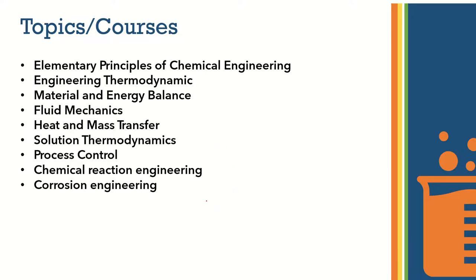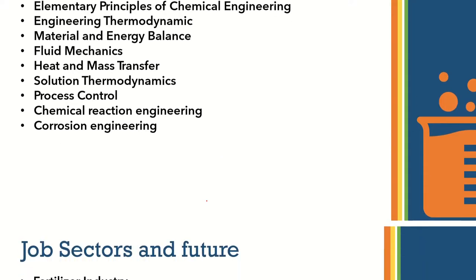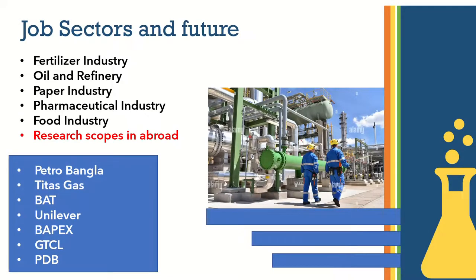When we consider a Chemical Engineering or Applied Chemistry and Chemical Engineering course, we will see there is a lot of chemical engineering industry involved. These include the fertilizer industry, oil and refinery, paper industry, pharmaceuticals, and food industry. The production in these industries involves chemical reactions, and chemical engineering plays a key role.